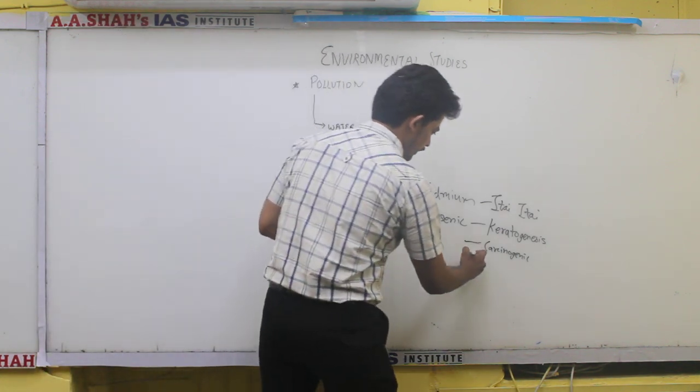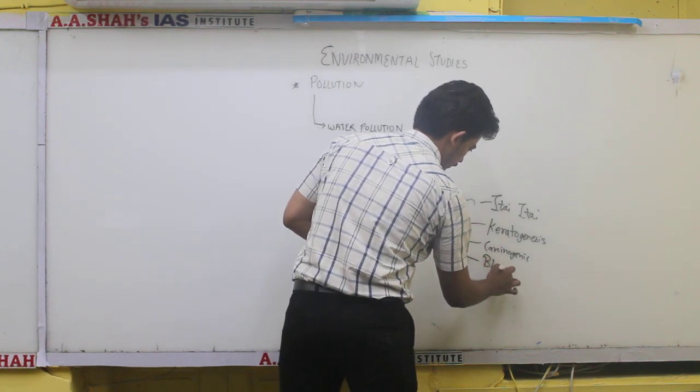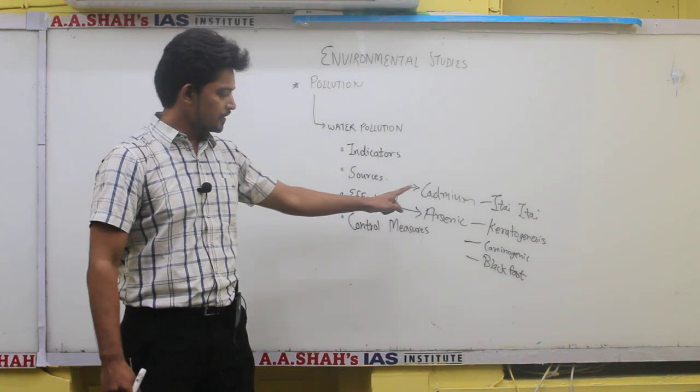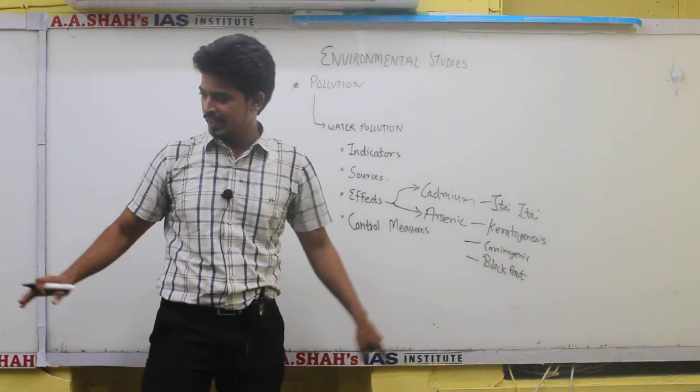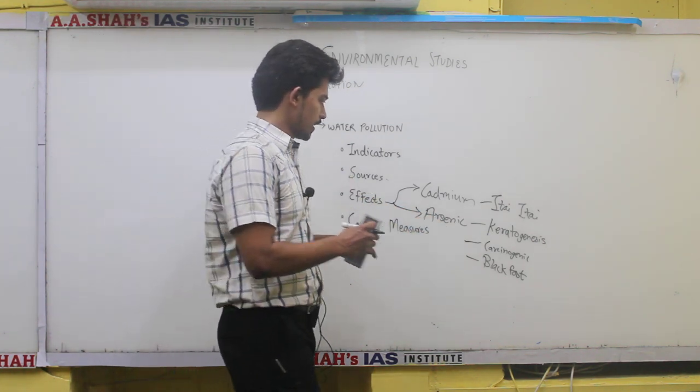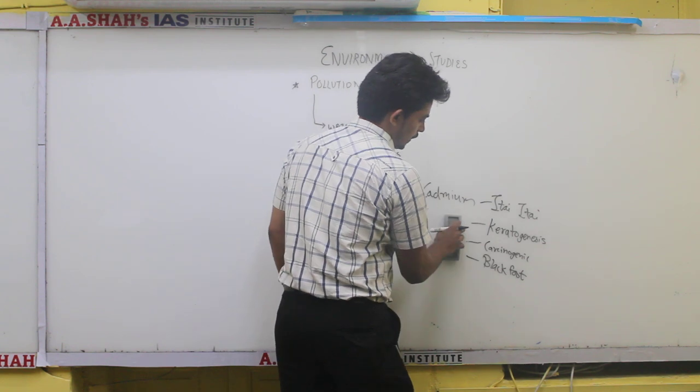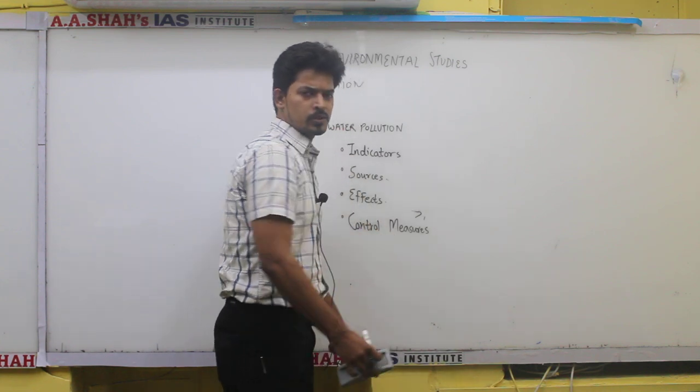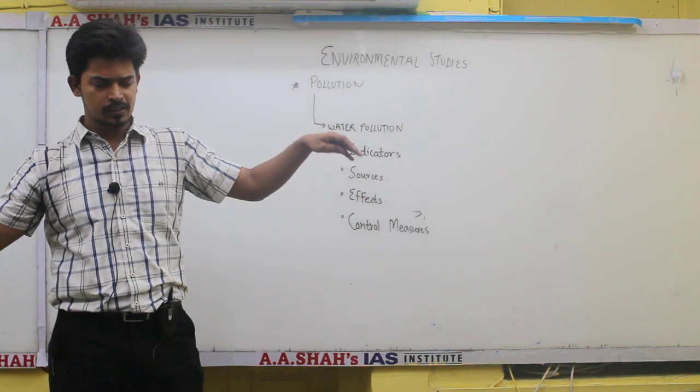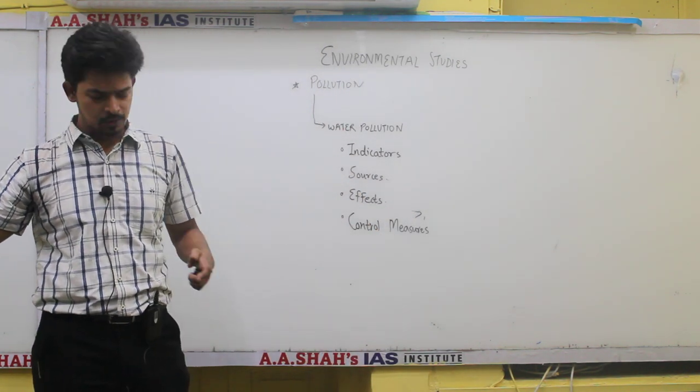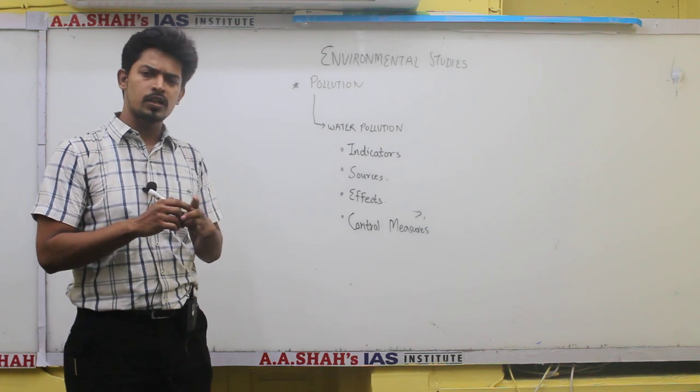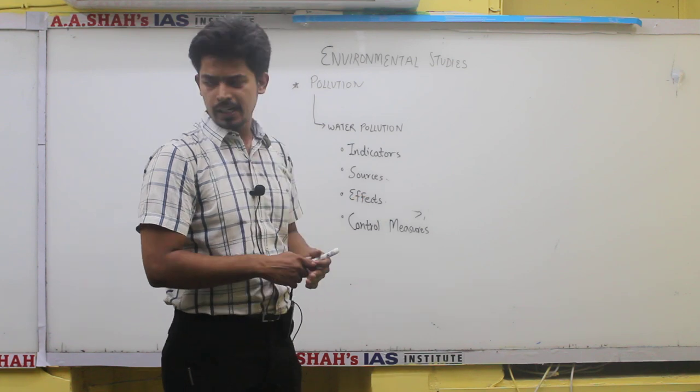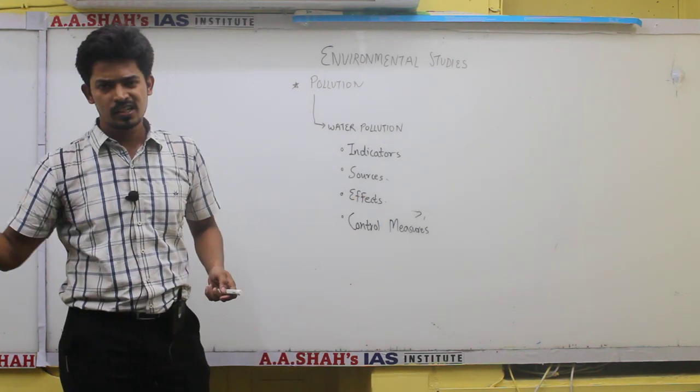There is something known as black foot disease which we also get because of arsenic. Arsenic contamination in contemporary times is from Bengal basically. In the Gangetic region of Bengal and Bihar, we get arsenic contamination. This contamination is mostly due to groundwater seepage, river water seepage through groundwater. Groundwater usage is high in that area and people drinking that water get affected by arsenic contamination.